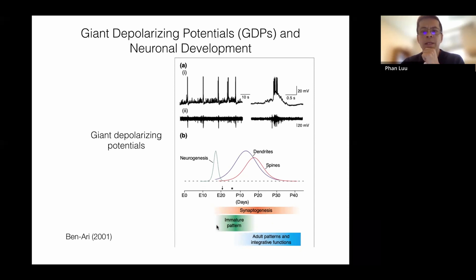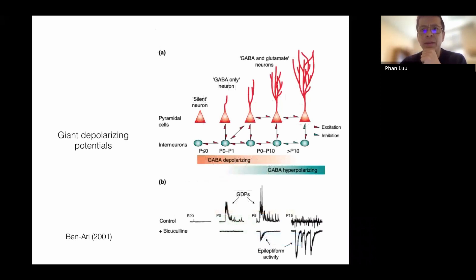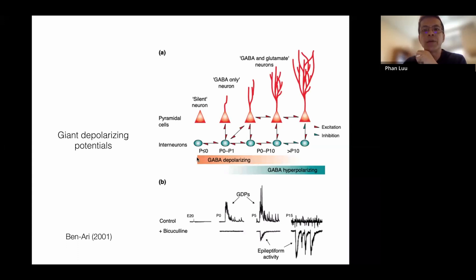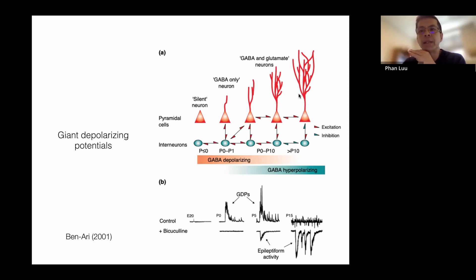These giant depolarizing potentials organize the development of pyramidal neurons. That's the delta component of the tracé alternant pattern. The brushes — the spindle bursts — are generated differently than the GDPs. Whereas GDPs are generated by spontaneous activity of GABAergic interneurons, spindle bursts are generated by reafference from the spontaneous muscle twitches observable in fetuses and rat pups in the first week of postnatal life.